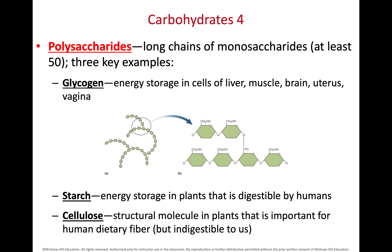We also have polysaccharides, made of many monosaccharide subunits — we need to have at least 50 subunits. The three most common polysaccharides are glycogen, starch, and cellulose. Glycogen is the complex carbohydrate made by animals. In human beings, most of our glycogen is in our liver or skeletal muscle tissue, but we also store some glycogen in the brain, uterus, and vagina.